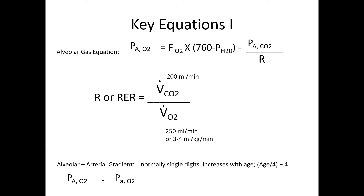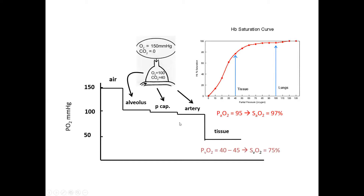The key equations: the alveolar gas equation with arterial CO2 as an approximation, a normal A-a gradient of roughly less than 10, though it can be higher with age. What's really important is not just the oxygen tension, but the consequent saturation of hemoglobin — hemoglobin saturation is dependent on tension. On the arterial side we're nearly 100% saturated, and on the venous side — after tissue oxygen consumption — venous saturation is around 75%, meaning blood returning to the right side of the heart is about 75% saturated.